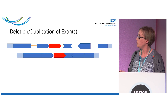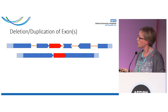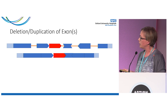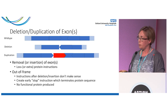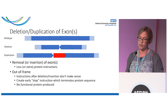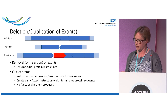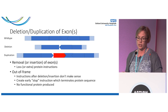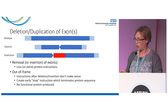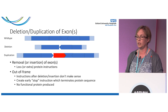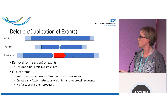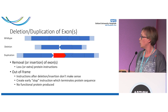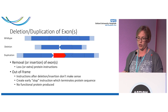The same is true of a duplication — if you duplicate an exon, you've got two copies and when you splice them together, you have extra material that again disrupts the reading frame. So deletions and duplications of whole exons remove or insert protein instructions. If the exons deleted or duplicated don't include a number of DNA letters that's a multiple of three, they will be out of frame, meaning instructions after the deletion or insertion don't make sense, likely creating an early stop instruction and no functional protein produced.